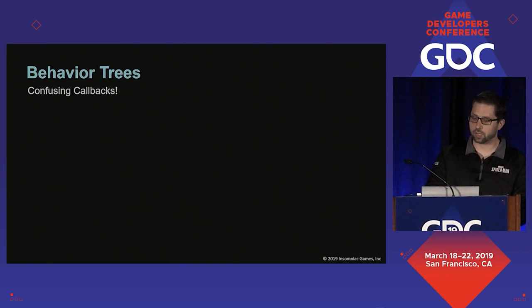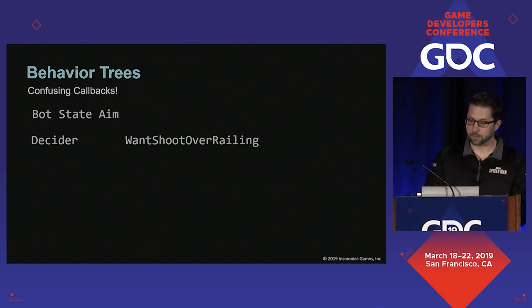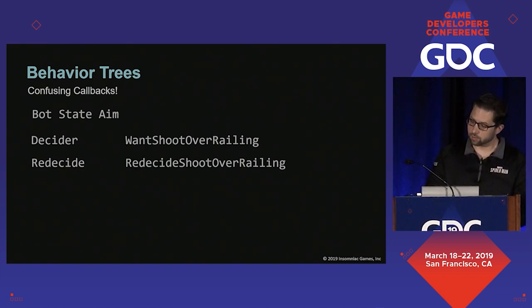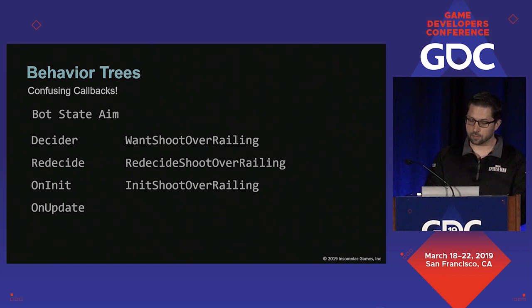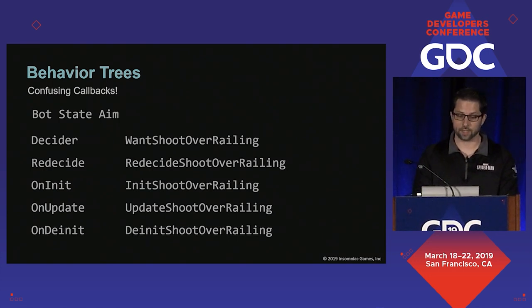Nodes often had to utilize numerous kinds of callback functions. For example, let's look at a simple node trying to use a state to aim at a target over a railing. That node will need to decide if it has to run — so we have a callback for that. The bot state doesn't ever end, so the tree needs to decide if that state should continue to run — another callback. The behavior tree nodes shouldn't change state until they are entered, so since we need to notify another system when we start aiming over a railing, we add a callback. The state doesn't do any weapon management, so we have a callback to do all of that from the tree, and we need to notify that same system when we're done using the railing — so we add a fifth callback.